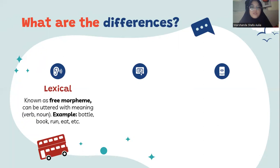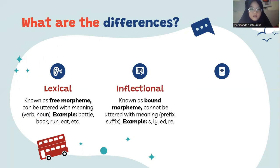The first one is the lexical morpheme, also known as a free morpheme, that can be uttered with meaning. It includes verbs and nouns — for example, bottle, book, run, and so on. Then we have the inflectional morpheme, known as a bound morpheme, which cannot be uttered with meaning on its own. It includes prefixes or suffixes.